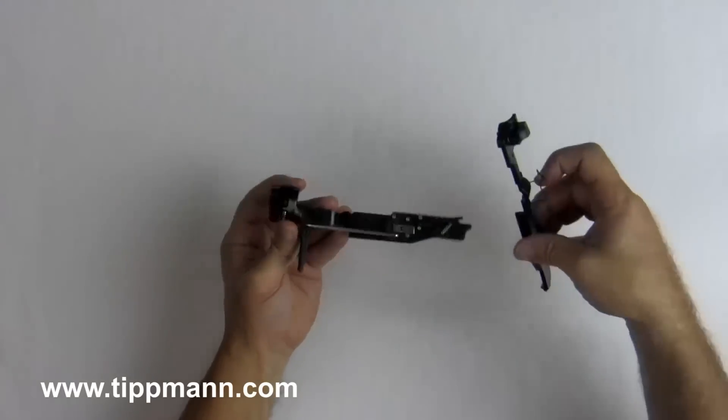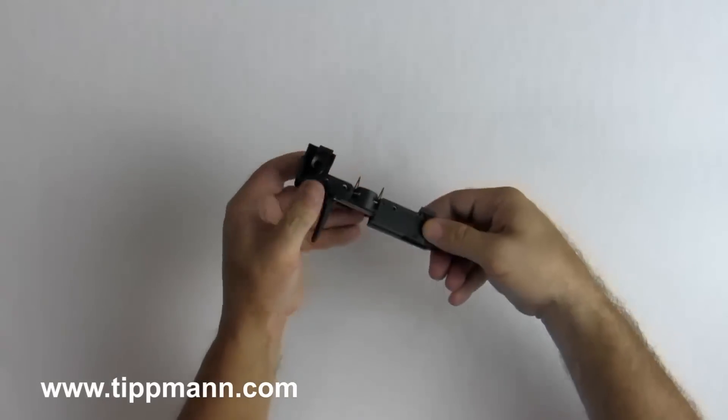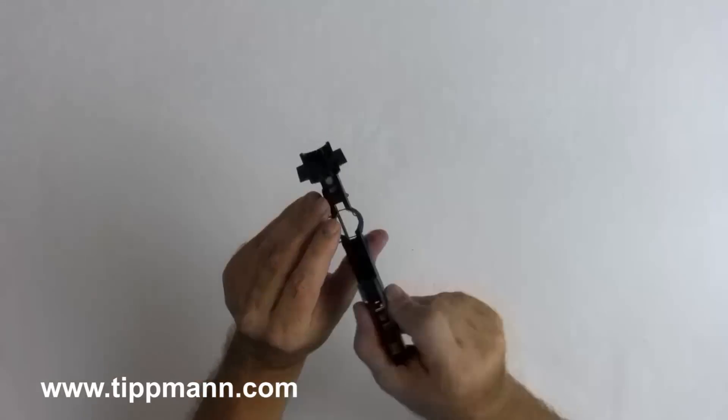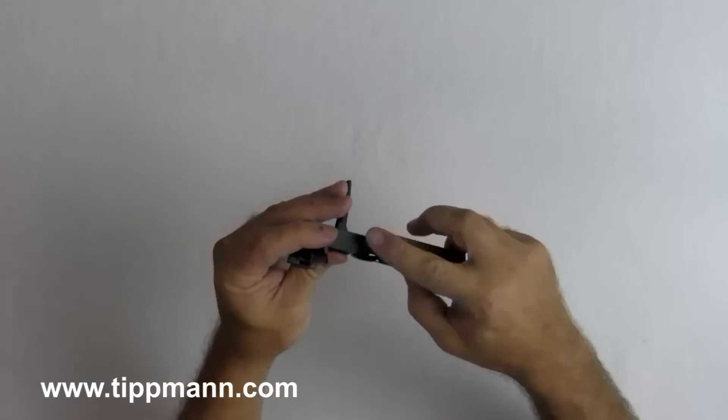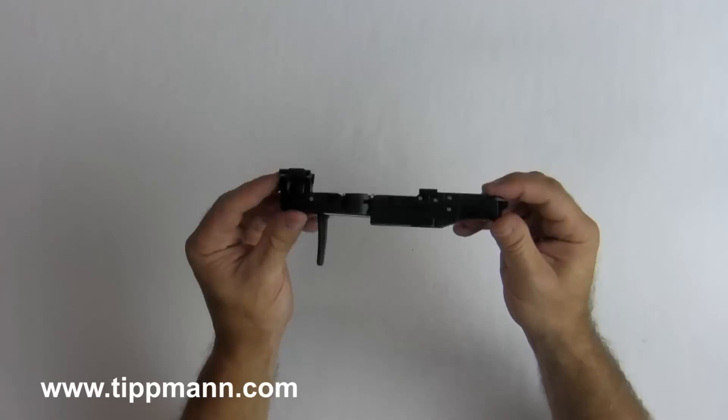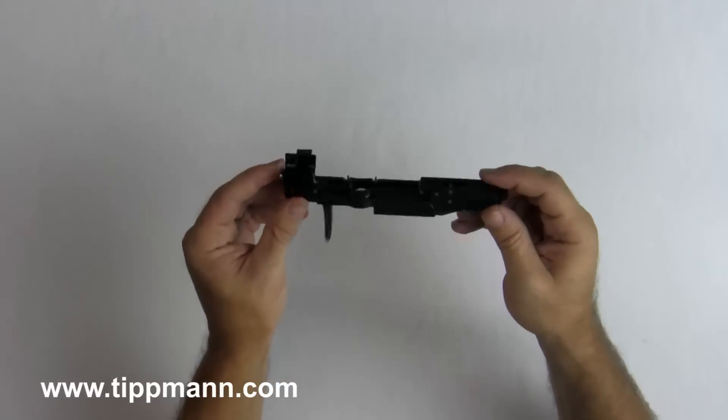And then the left hand side of the trigger group can snap back on. Just snaps together and then clip the wire retaining clip back into position on the right side. And that is the trigger group reassembled.